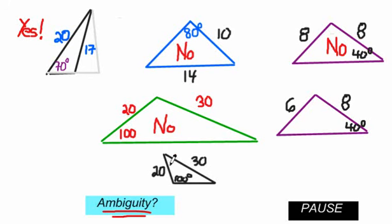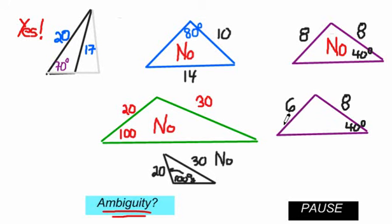What about the next diagram? Is this one going to have any ambiguity? Yes — because you've got an angle, a short side across from it, and a long side adjacent to it. There will be ambiguity because this 6 — the piece of fishing line — could have come in the other way, in which case you've got that corner or its supplement as the possible answers.